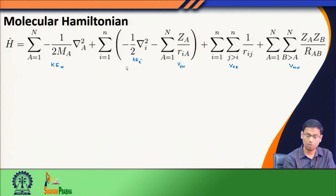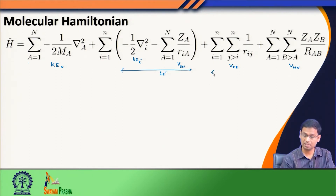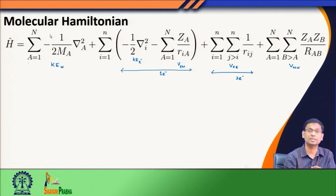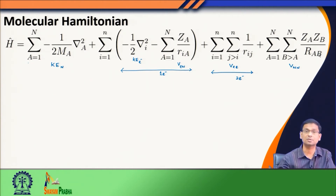These are all one-electron operators. These are also all one-electron operators. These are two-electron operators. These terms are independent of electrons — the nuclear kinetic energy and the nuclear-nuclear repulsion energy.